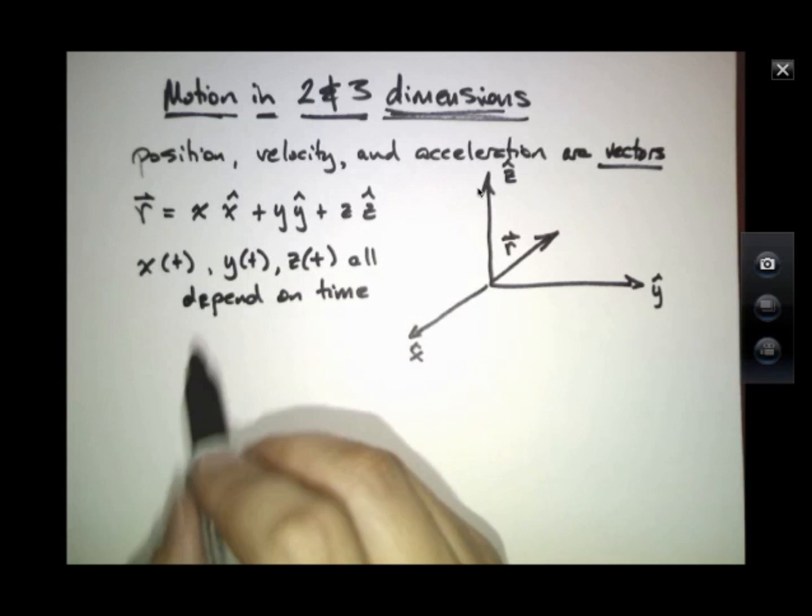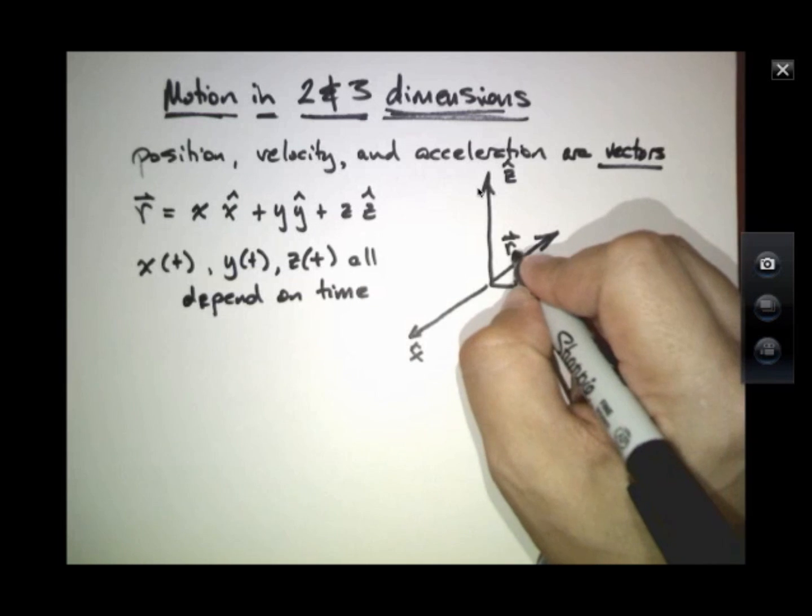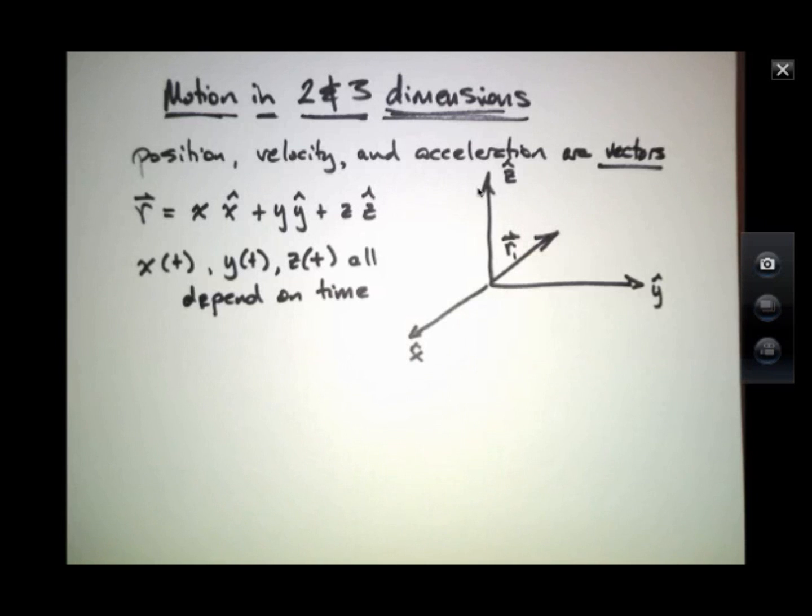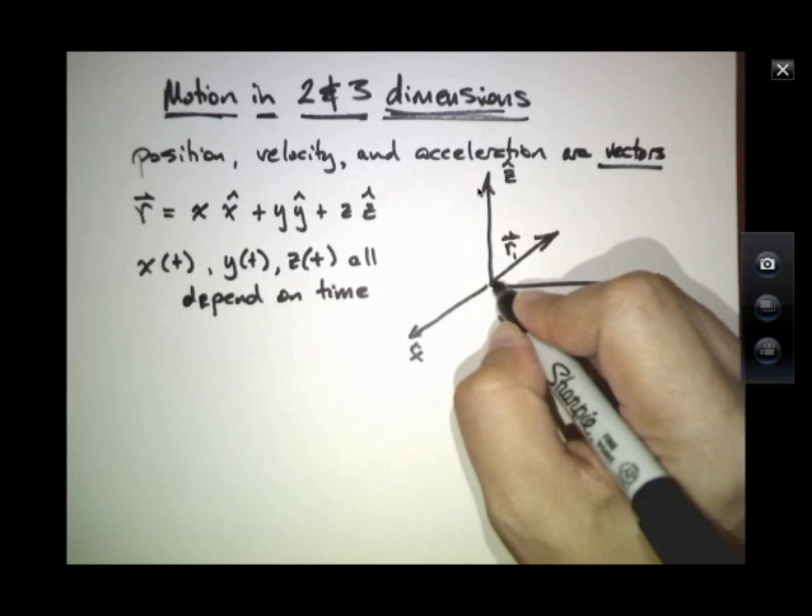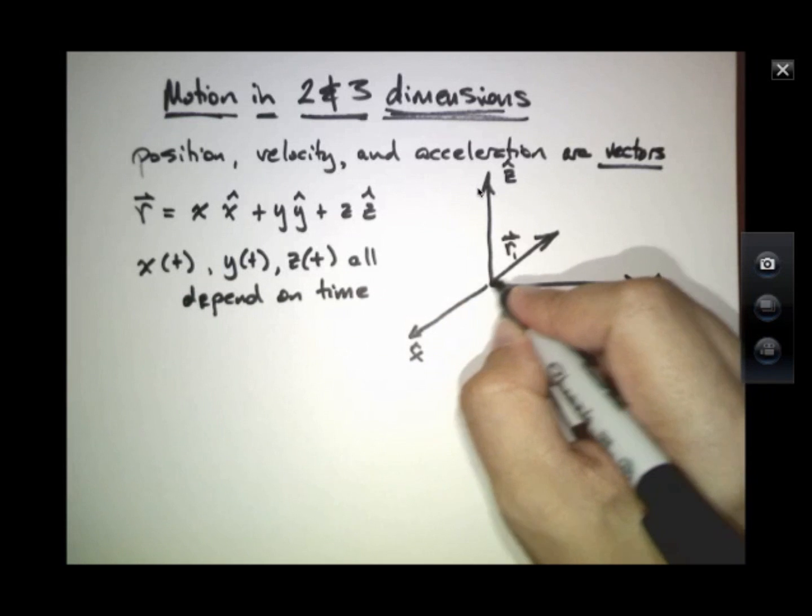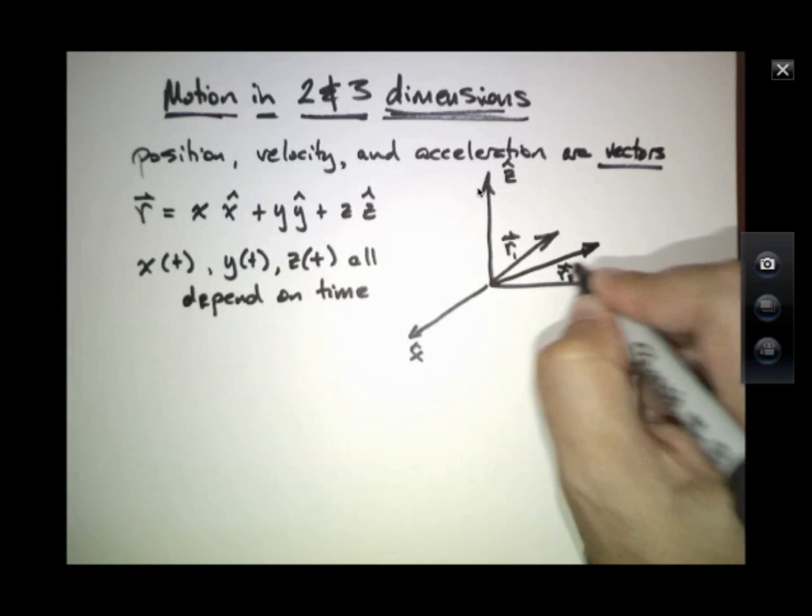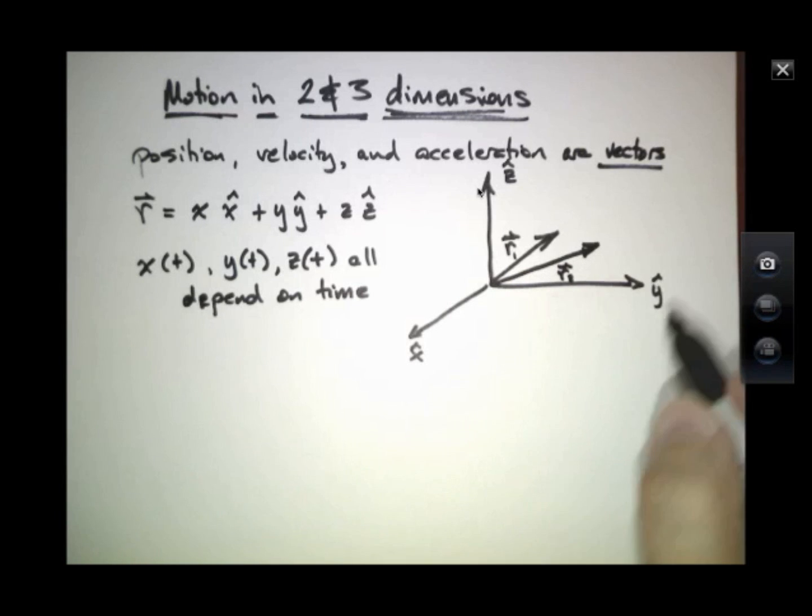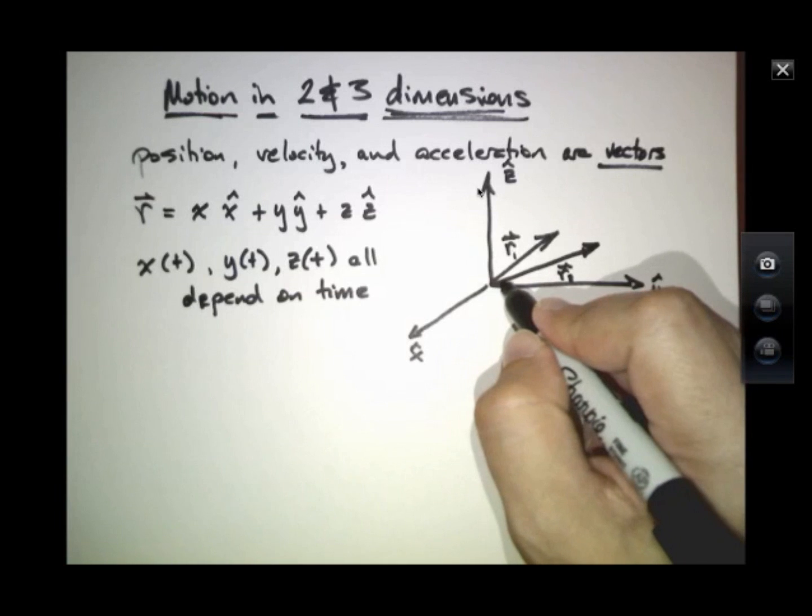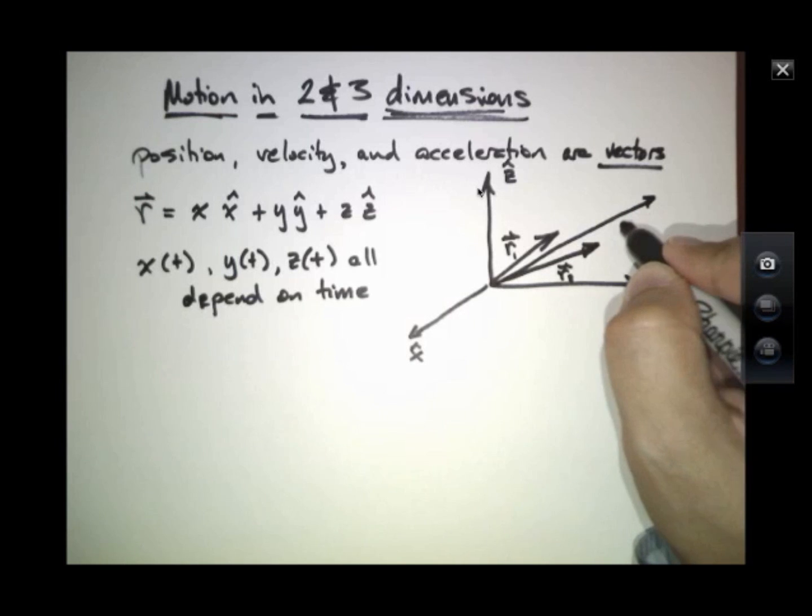In this case, if each of these functions is separately varying, and we go back to some of our experience with one-dimensional motion, then if this represents R at some time t1, if all these functions are separately changing, then the tip of the vector may move over here at some time t2, and may move over here at some time t3.